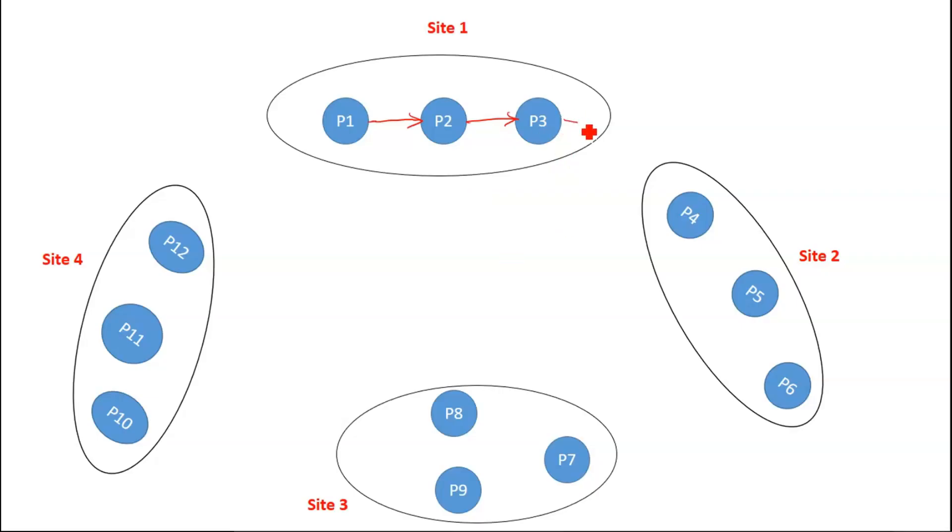Now p3 is waiting for p4. P4 waiting for p5. P5 waiting for p6. P6 waiting for p7. P7 waiting for two resources available at p8 and p9. Then p10 waiting for p11. P11 waiting for p12. This is how actually the dependency exists.